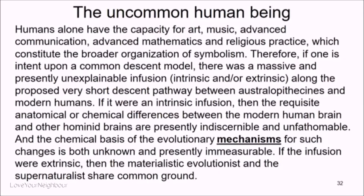In universal common descent, we are just below Neanderthals or australopithecines. If it were an intrinsic infusion, the requisite anatomical and chemical differences between the modern human brain and other hominid brains are presently indiscernible and unfathomable, and the chemical basis for the evolutionary mechanisms for such changes are both unknown and presently immeasurable. If the infusion were extrinsic — meaning some outside influence — then the materialist evolutionist and the supernaturalist share some common ground. The mechanisms are unknown for that.